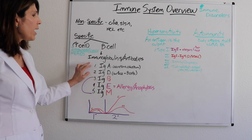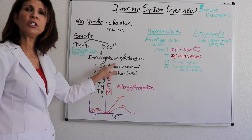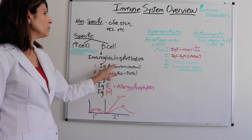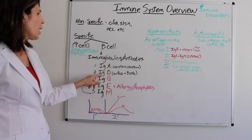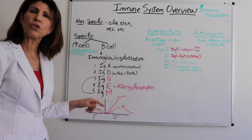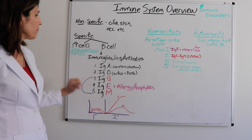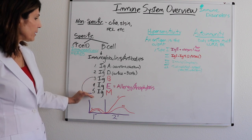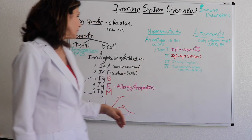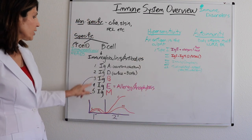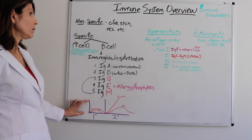With IgA and IgD, I'm not going to talk too much about them. IgA is involved in secretions — infants have immunoglobulin A in the mother's breast milk and colostrum. IgD are found on the surface of B cells. So it's really IgE, IgG, and IgM that are going to provide the most relevance when we talk about hypersensitivity disorders. IgG and IgM are also the ones involved in the primary and secondary immune response.